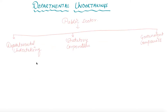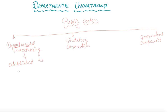Let's start with the first form of organization under the public sector, which is departmental undertakings. As the name says, it is departmental — meaning it is something linked with the government departments. While defining departmental undertakings, we can say these are the enterprises which are established as departments of a ministry.